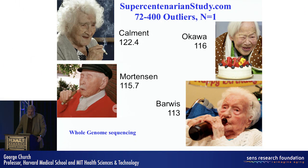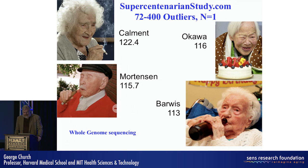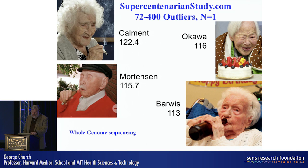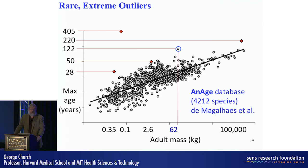The story I'm building here is that we need to embrace the outliers. The middle of the bell curve is great, but we really want to embrace outliers, and we want to be able to test N-of-one studies genetically and epigenetically. Here are four of somewhere between 70 and 400 outliers who live past 110 years. If you want more information, go to supercentenarianstudy.com, where we're well on our way to sequencing most of these individuals.